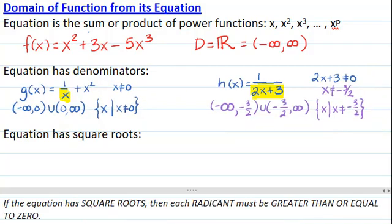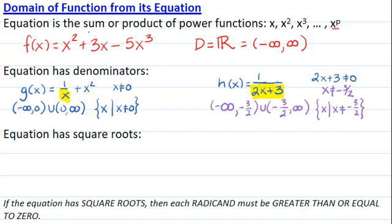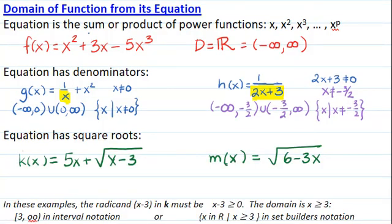If the equation has square roots, then its radicand must be greater than or equal to 0. In these examples, the radicand x minus 3 for k must satisfy x minus 3 greater than or equal to 0, or x greater than or equal to 3.